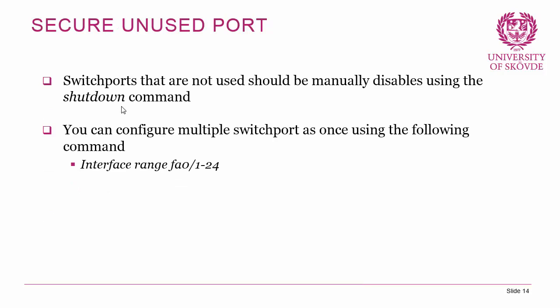When we talk about securing unused ports, those are ports not connected to any device — basically empty ports. These should always be manually disabled using the shutdown command, because anyone could plug in a rogue device to an active unused port. You can configure multiple switch ports at once using the range command: 'interface range fastethernet 0/1-24', then apply 'shutdown' to all of them at once. This is a very convenient way to disable multiple ports.